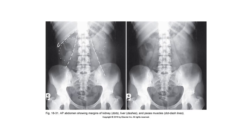Because of kidney excursion during respiration, it is possible to differentiate kidneys from other shadows by making exposures on different phases of respiration. Images should be marked if exposed on a phase of respiration other than expiration. The Scout AP radiograph in the supine position demonstrates the location of the kidneys, their contour, and opaque calculi if present, and also serves to check gastrointestinal tract preparation and exposure factors.